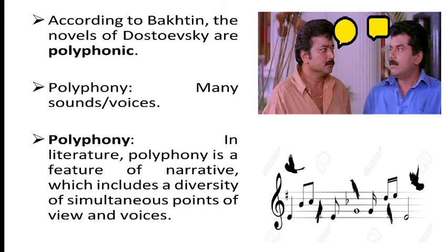Bakhtin believed that the concept of truth should be understood as a product of such dialogic processes. According to Bakhtin, Dostoevsky's novels have characters who have distinct voices that are not limited by the author's voice. Suppose there is a shopkeeper, a farmer and a businessman — they must behave and act as if they have a separate identity, a separate consciousness.